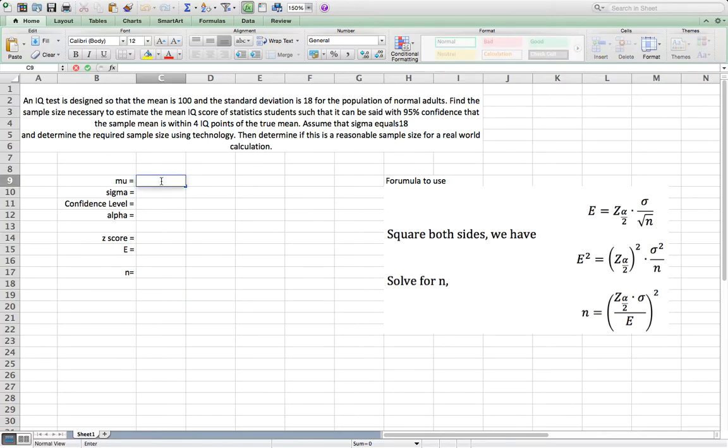So let's do the calculation. Mu is the population mean, 100 is given. Sigma is the population standard deviation, 18 is given. Confidence level is 95%, alpha is 1 minus, equal to 1 minus c11, which is 0.05.